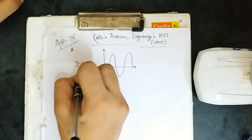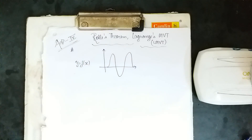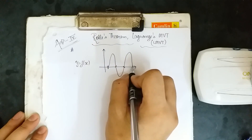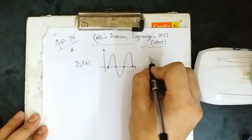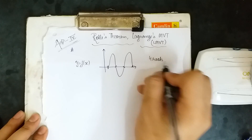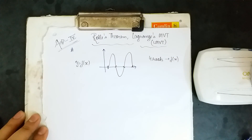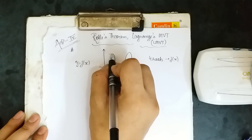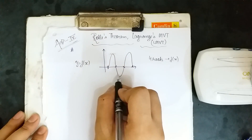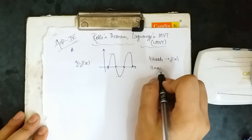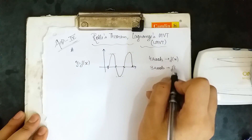If I have y = f(x) here, how many roots does f have? 1, 2, 3, and 4 — so that has 4 roots for f(x). Now let me calculate the number of roots for f'(x). f'(x) will be 0 here, it will be 0 here, and it will be 0 here — so 3 roots for f'(x).